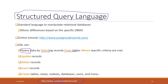SQL can query data by selecting records from tables where specific criteria are met. You can also update records, delete records, insert new records, or even use SQL to create tables, views, indexes, databases, and users. Users are just different accounts that can access your database.